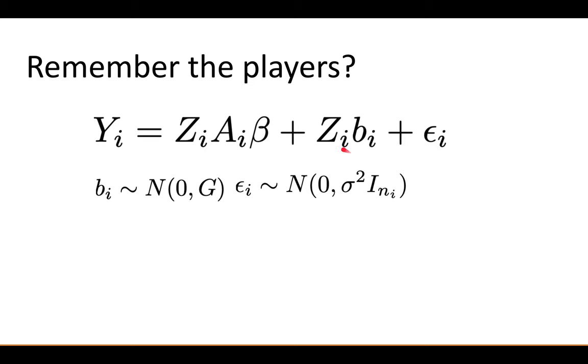Then we have ZI again, which is just a column of ones here, and BI, which is the random effect. Again, we're not estimating BI because it's a random variable. Instead, we're estimating the parameter G, which is a covariance matrix. Then we have the residual variance epsilon I, which has sigma squared as the within-subject variance, and the only thing that's subject-specific here is the size of this identity matrix, which is NI by NI, where NI is the number of observations for that subject. Importantly, there's no I on sigma.